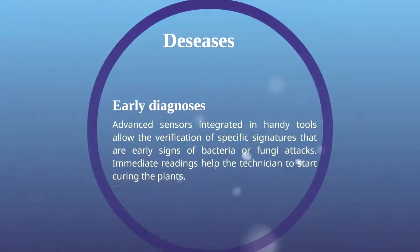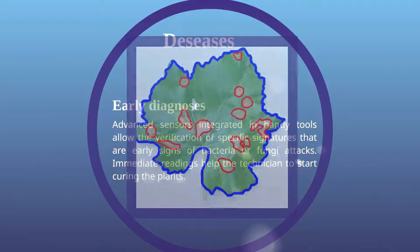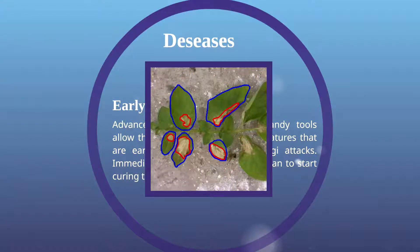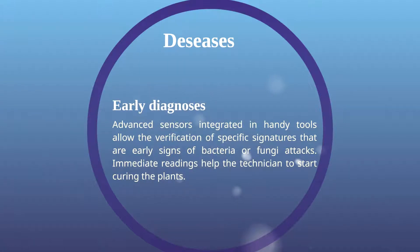New sensors, including low-cost multispectral cameras, can be used or combined in a way that the signature of diseases is identified before the technician can detect it. This is prevention against chemical curative actions.